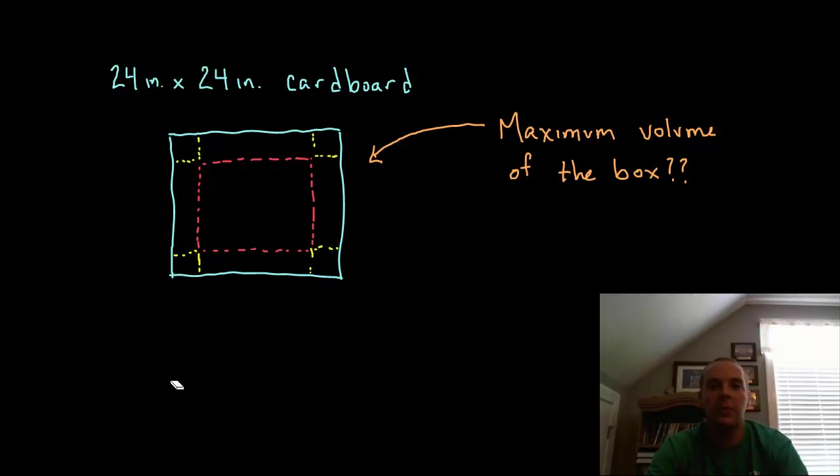In this example, I've just randomly chosen a 24 inch by 24 inch sheet of cardboard. We're going to cut these corners out, and you can kind of see the sides or the tabs that you would get and fold those up to get the box that we're trying to maximize the volume of.